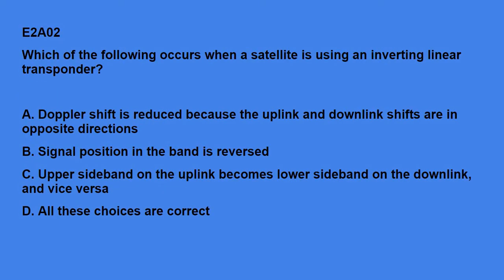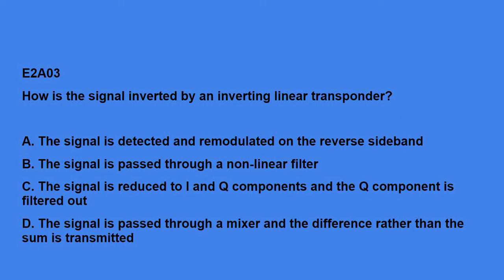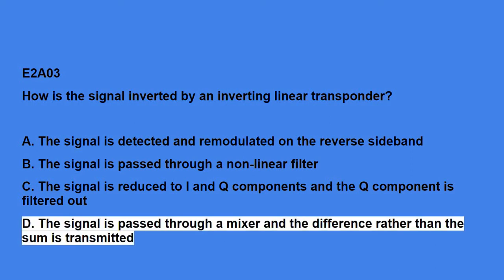E2A02: Which of the following occurs when a satellite is using an inverting linear transponder? The answer is all of these choices are correct. Doppler shift is reduced because the uplink and downlink shifts are in opposite directions; signal position in the band is reversed; and upper sideband on the uplink becomes lower sideband on the downlink, and vice versa.